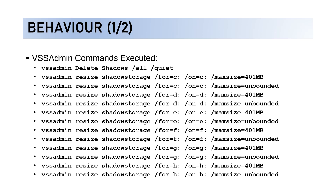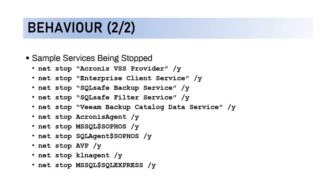When Conti is already on the system, it tries to execute several VSS Admin commands. It will try to delete shadow copies and use different commands to resize the shadow storage for drives C, D, E, F, and so on — targeting any available attached drives.